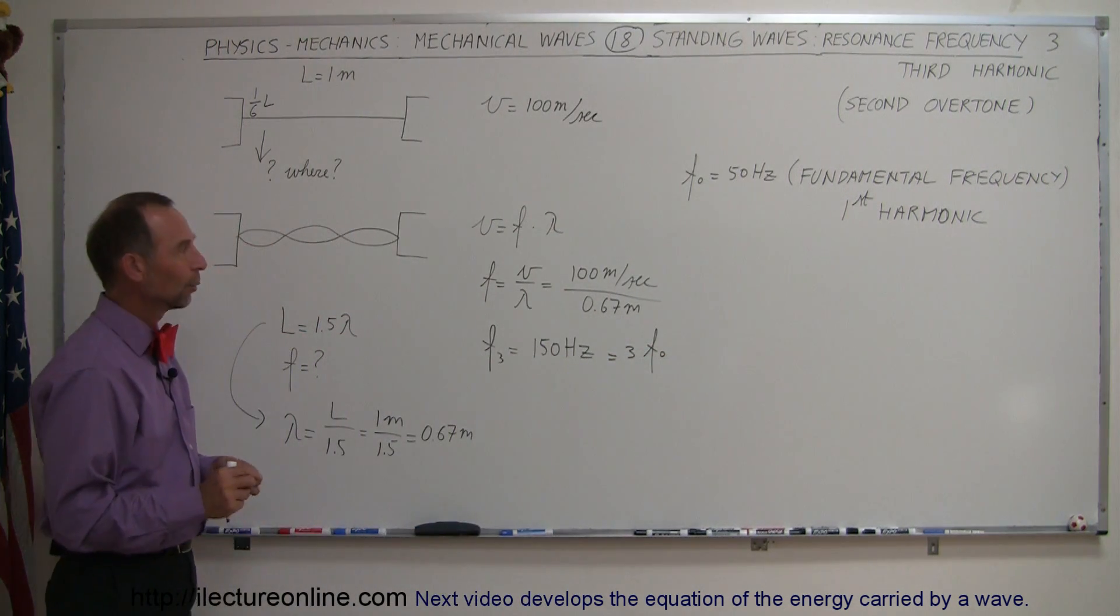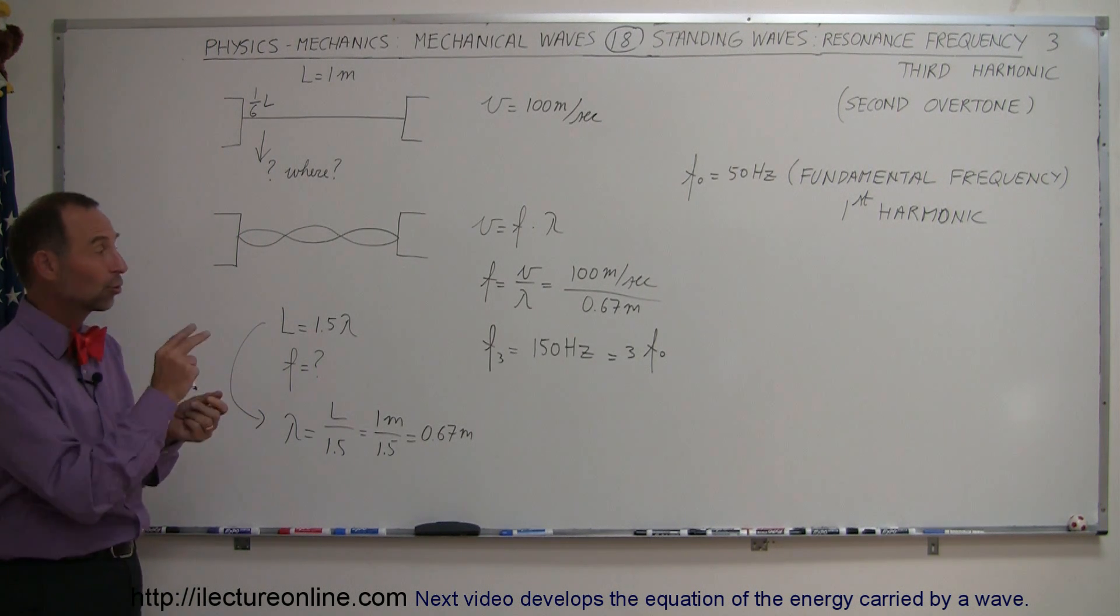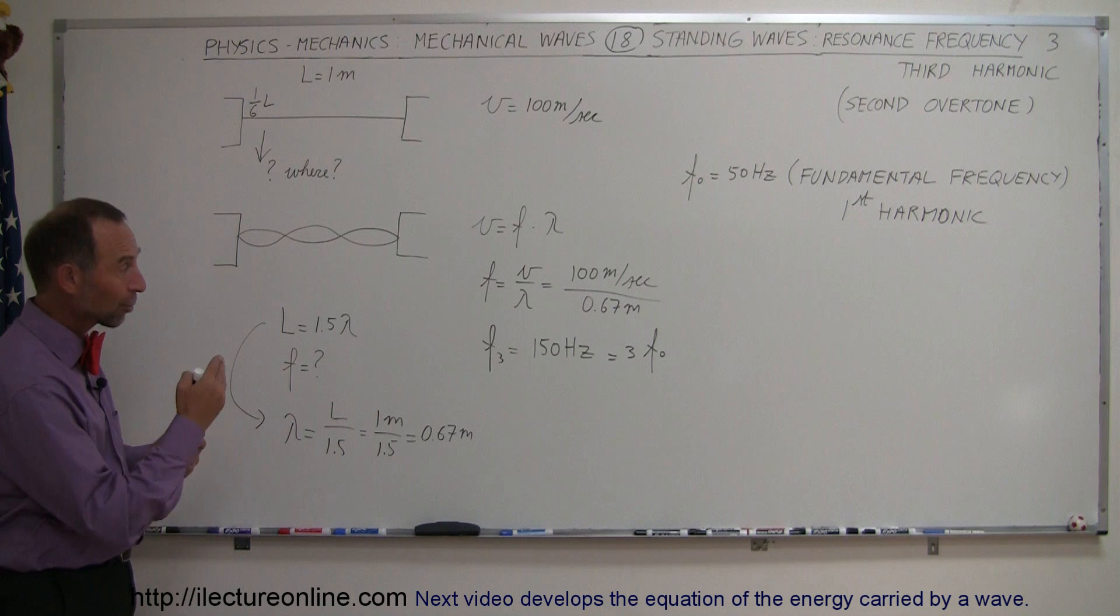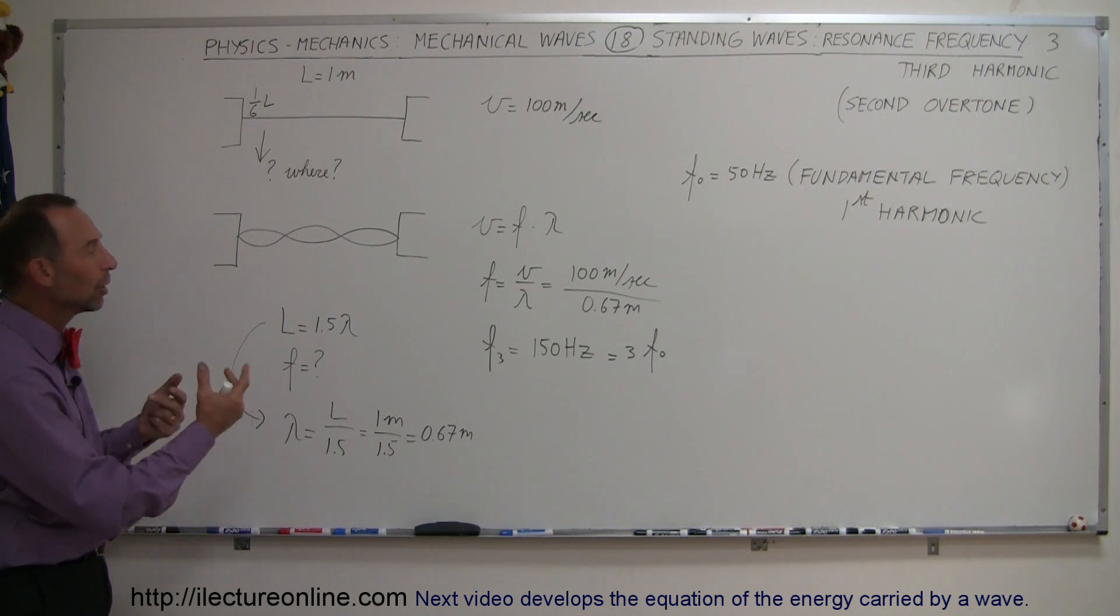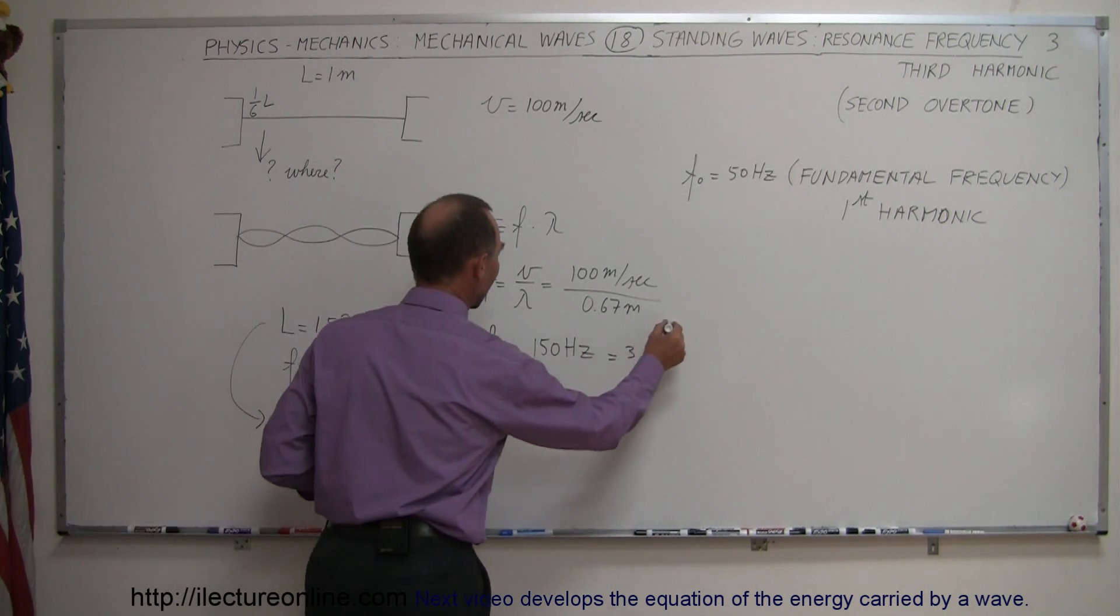So notice that with the second harmonic, the frequency was 100 hertz, which is twice the fundamental frequency, and with the third harmonic, that is now, as we see, three times the fundamental frequency. So for each harmonic, it's simply a multiple of the fundamental frequency, and that's how we find out what this is.